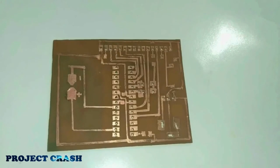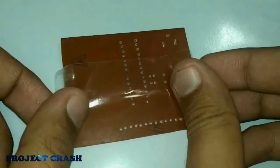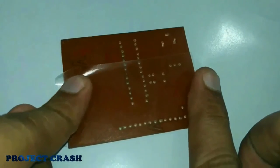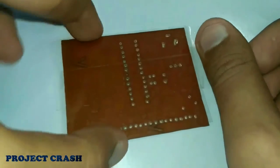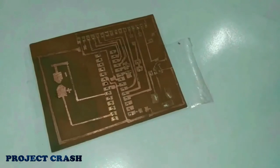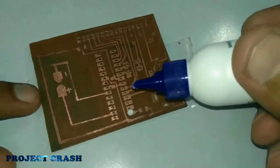After etching, I make holes and cover the backside of PCB with tape. I apply the white glue on the terminals and holes.